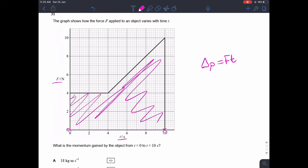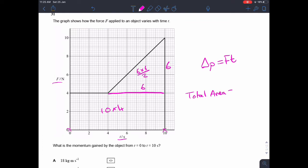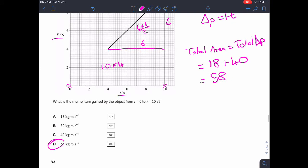So you can divide this into some shapes. If we divide this into two shapes, we've got this one here, which is a height of six and a width of six as well. So the area of that is six times six divided by two. And the area of this one is 10 times four. So we've got total area equals total change of momentum, which equals 18 plus 40, which is 58. And so we've got an answer of D.